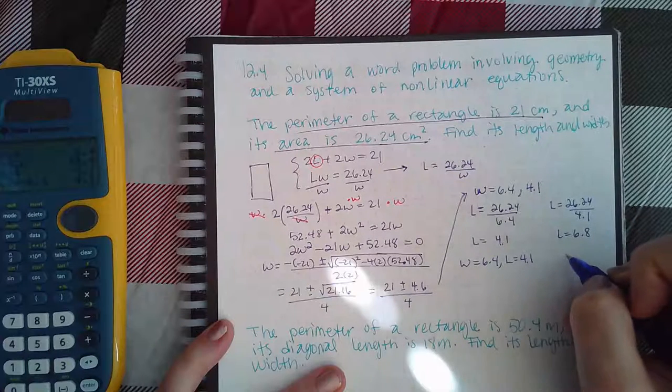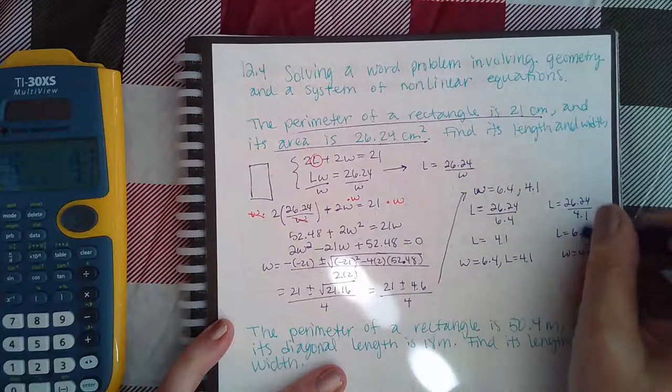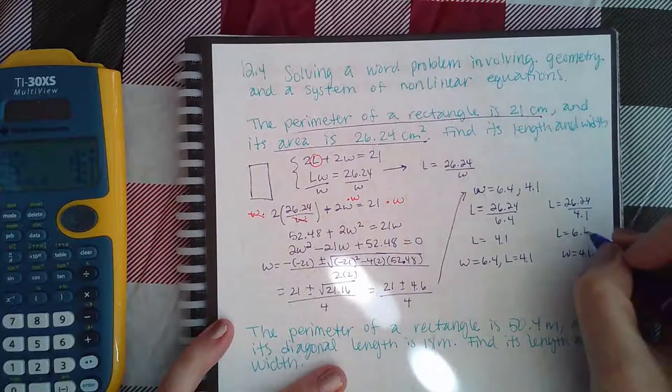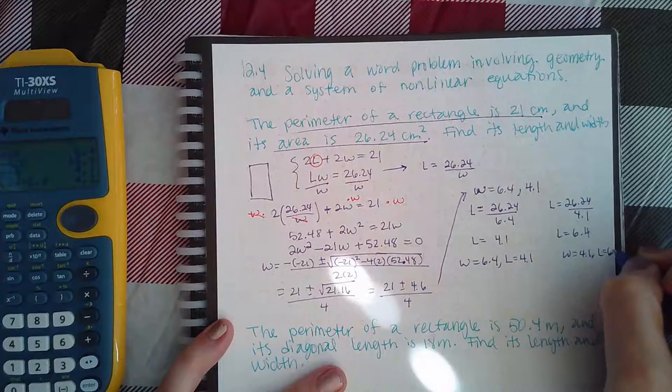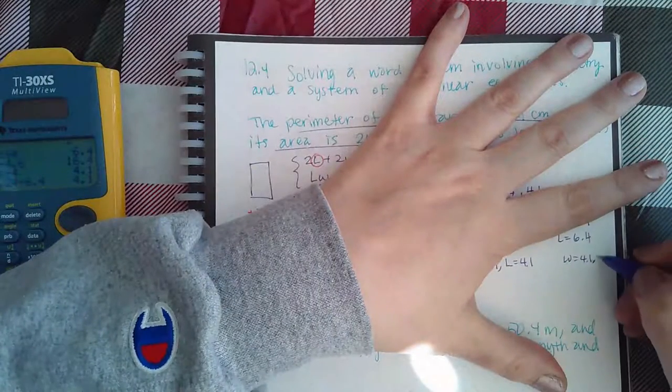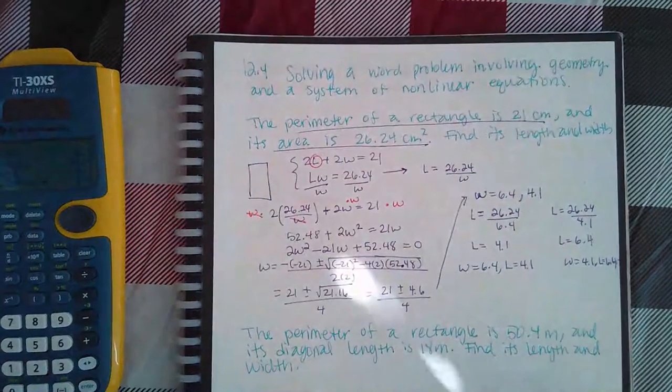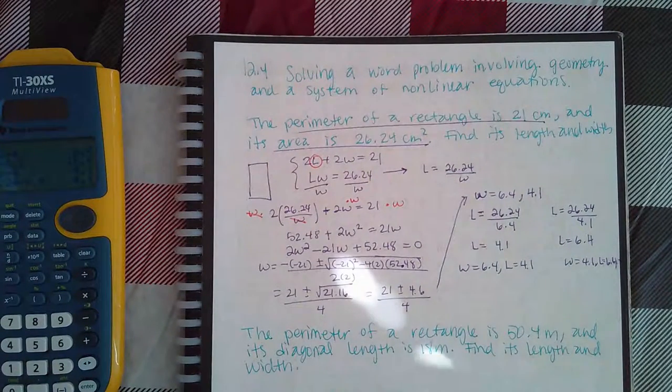So this is what we get: W equals 6.4 and L equals 4.1, or we get W equals 4.1 and L equals 6.4. So these are the two values that we end up with. Which one makes more sense is really the answer, because the numbers are the same.